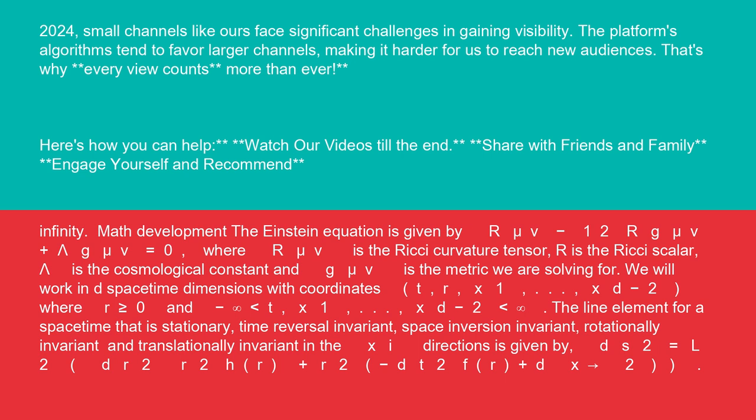where R_μν is the Ricci curvature tensor, R is the Ricci scalar, Λ is the cosmological constant, and g_μν is the metric we are solving for.